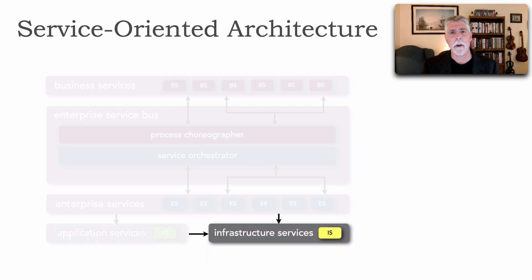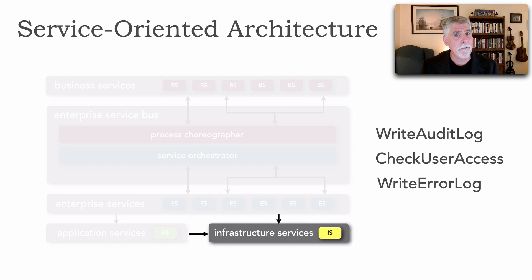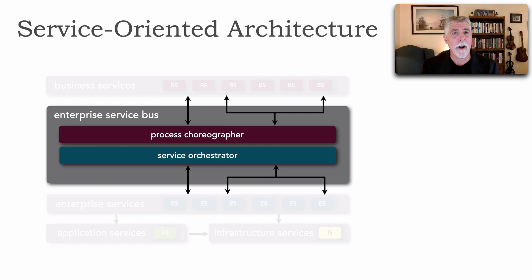And then finally, infrastructure services, which were shared across the organization like enterprise services — things that most systems needed to do, for example, writing audit logs, doing security, checking authentication, error handling. And of course, we can't forget the main piece of SOA, which was the very large enterprise service bus, which acted as the glue bringing all of that together.